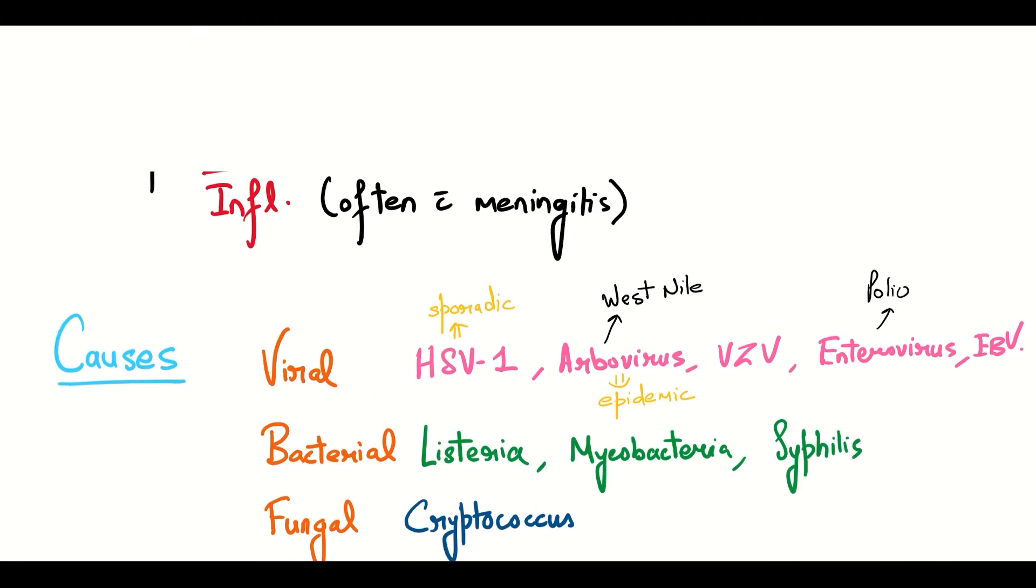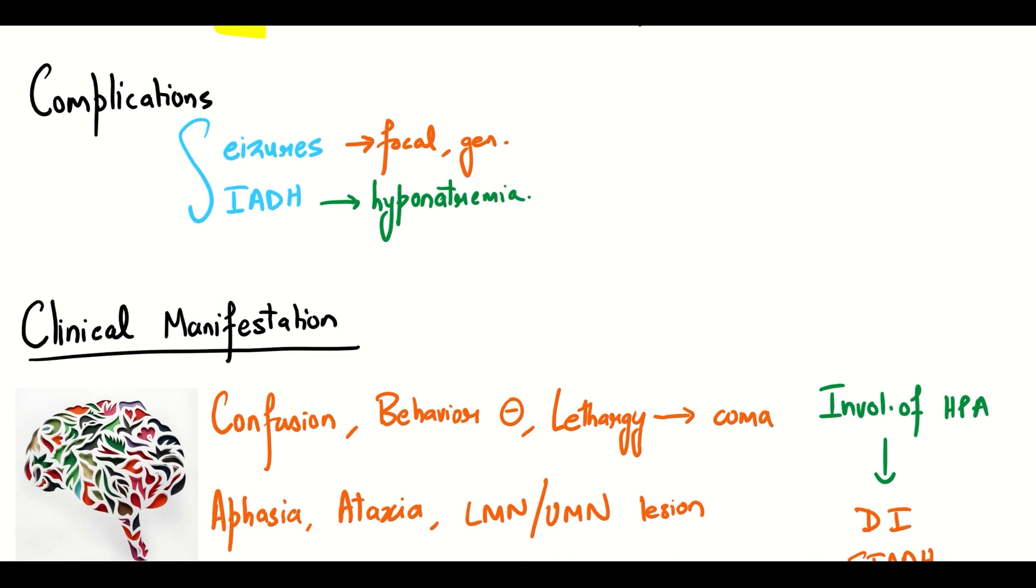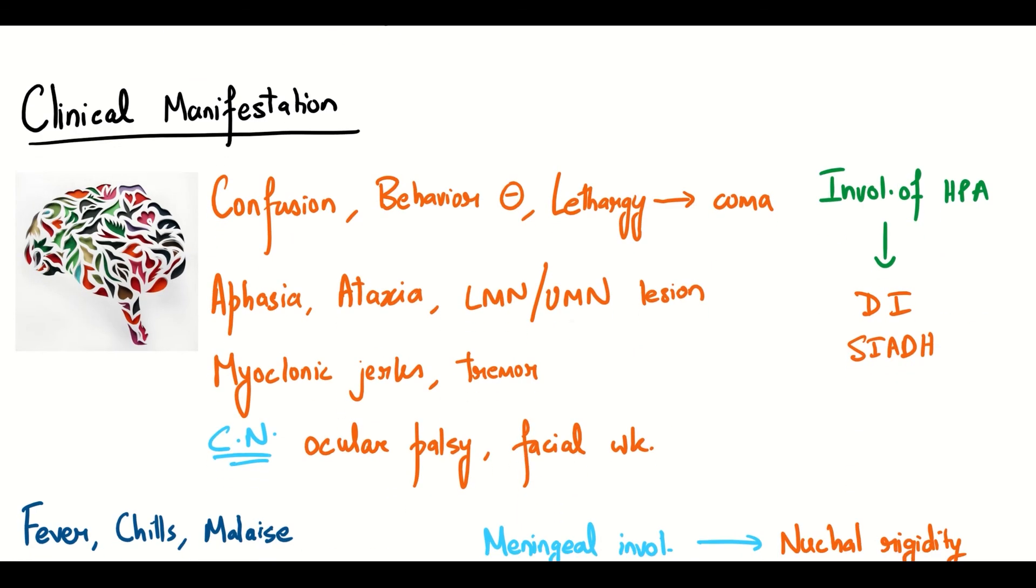Let's have a recap. Encephalitis is most commonly caused by HSV1 and arbovirus, which are respectively the epidemic and sporadic causes. We need to also keep the other causes in mind. Complications include seizures and SIADH.